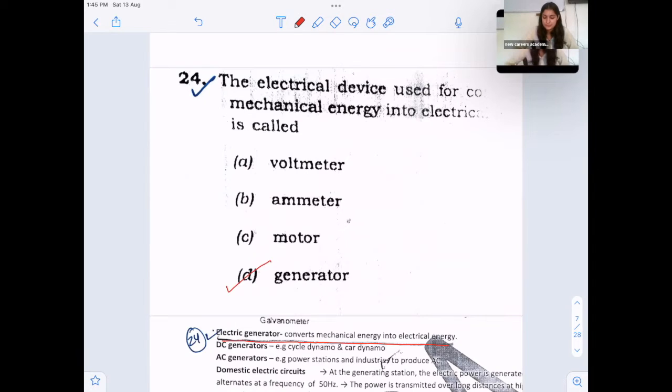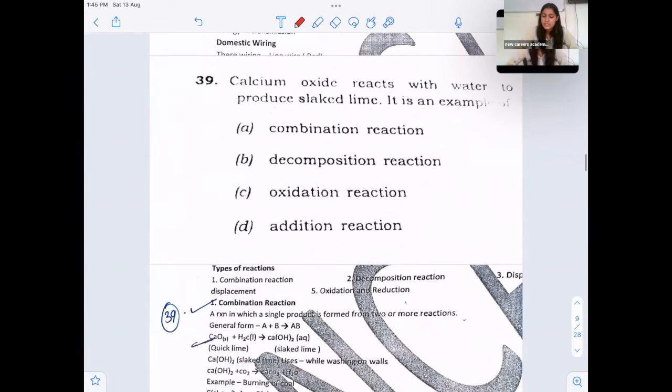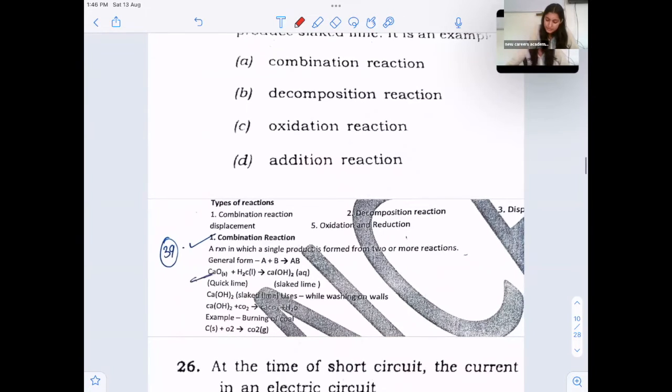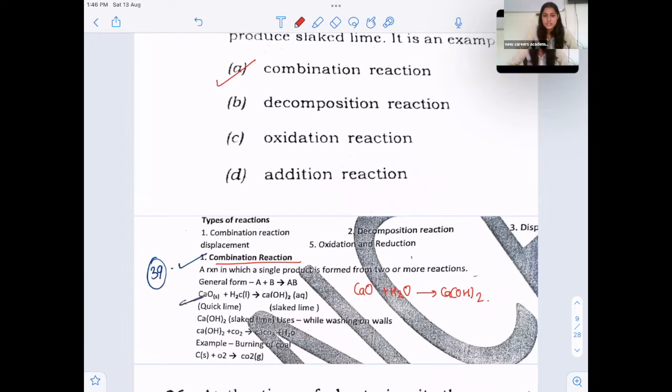Let us see from notes. So calcium oxide is CaO. It combines with water to form calcium hydroxide, which is called slaked lime. So this is example of combination reaction. So option A is correct, combination reaction.